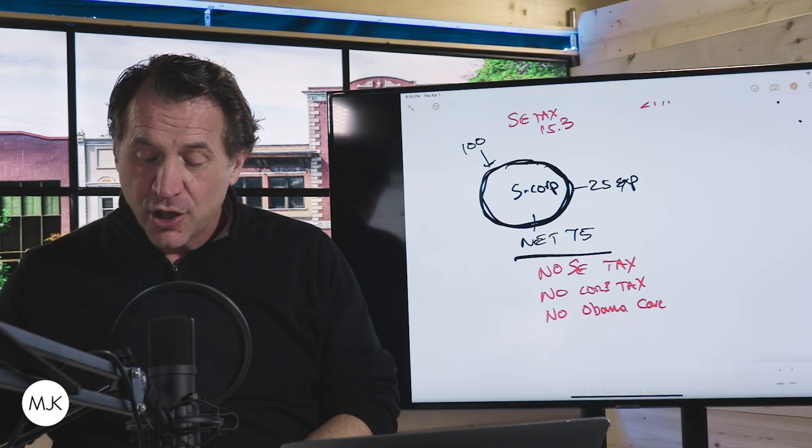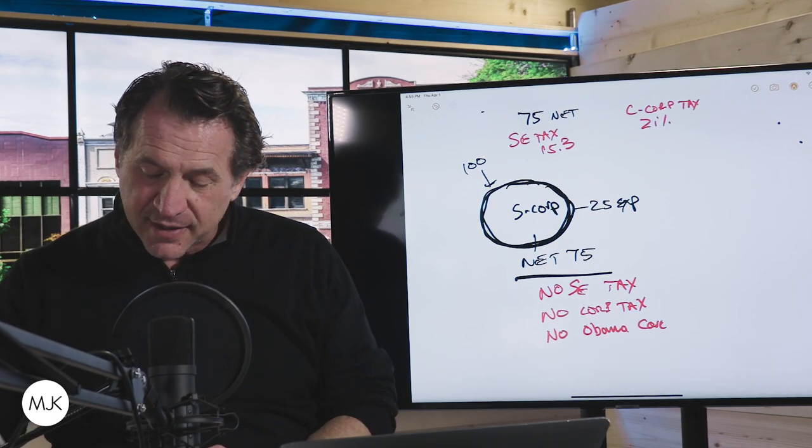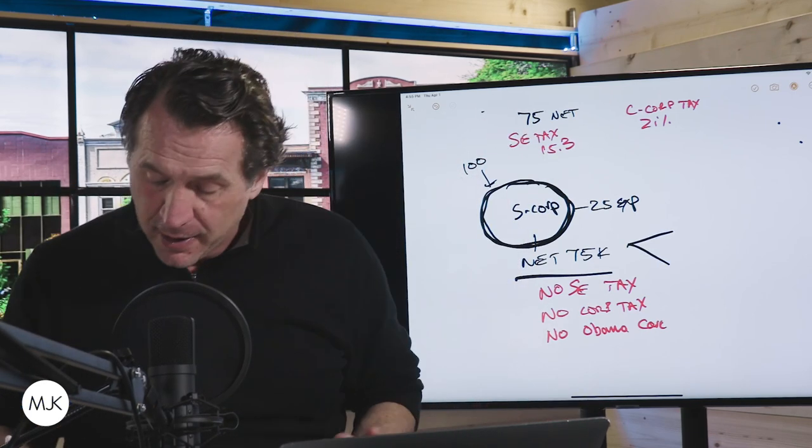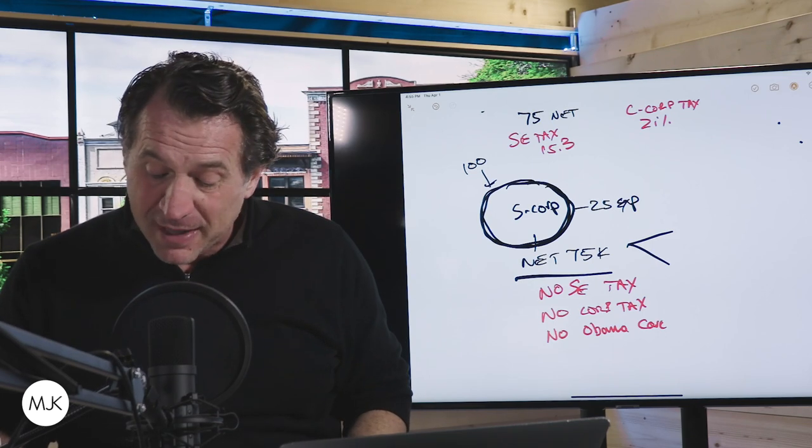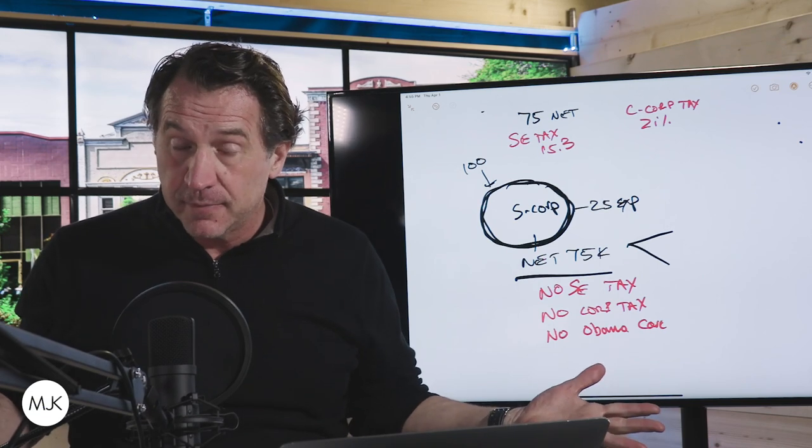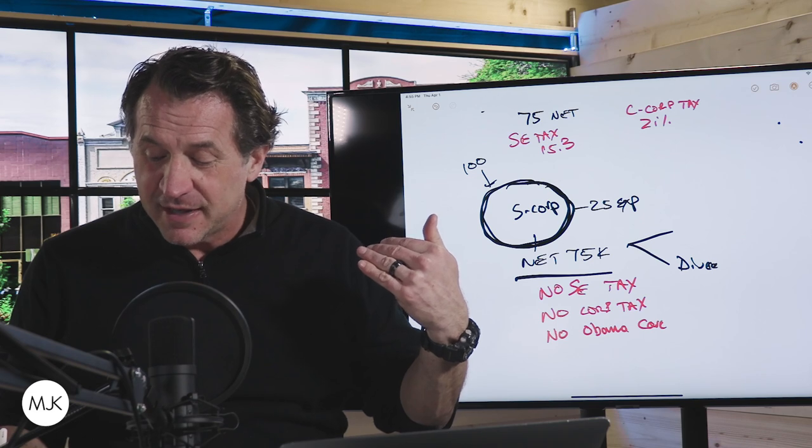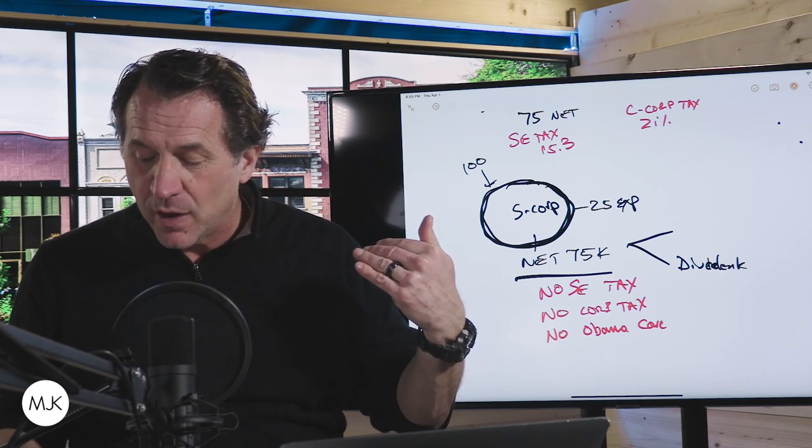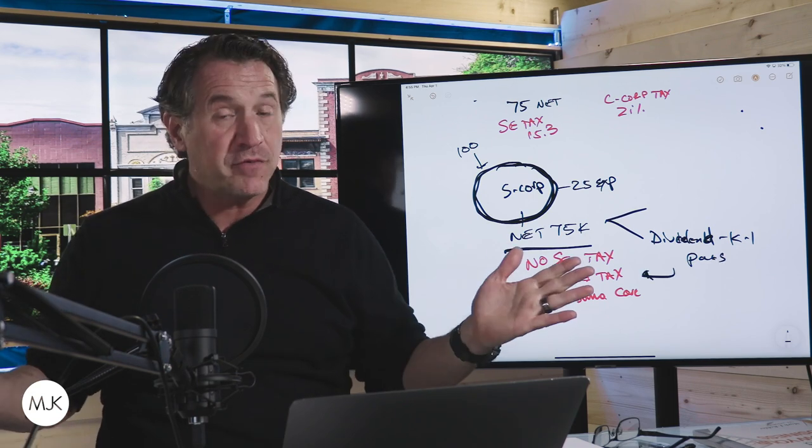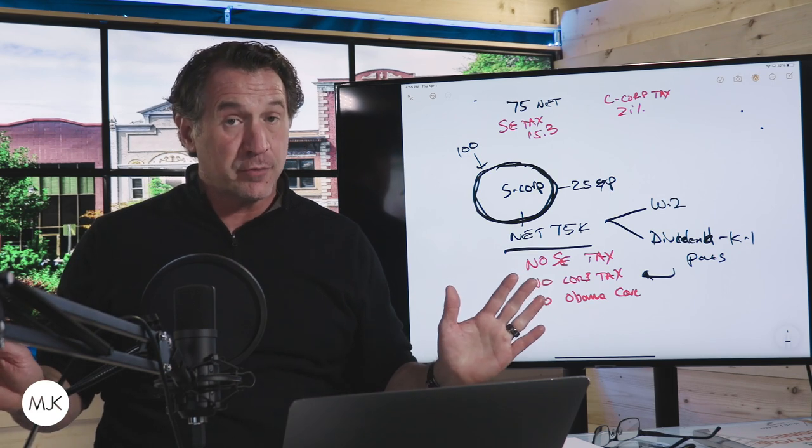But here's the catch. You have to take a salary. So what we do is we take this 75 grand that you're going to make. And on paper, you don't have to wait around for a paycheck, but we claim maybe half of this or a good chunk of it as dividend, kind of pass-through. So this is dividend or K-1 pass-through income, which is no self-employment tax, no corporate tax. But up here, you have to take a W-2 for a reasonable amount.